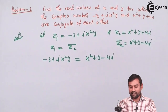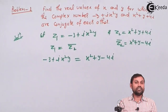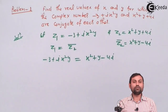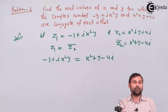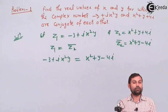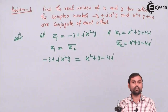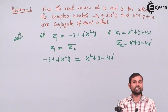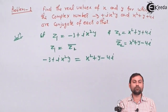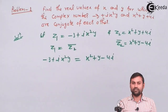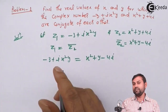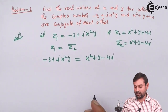अब यहाँ पर एक concept use करेंगे — equality of a complex number। When two complex numbers are equal, कब दो complex numbers equal होते हैं — जब उनके real parts equal होते हैं और imaginary parts equal होते हैं, तब जाके दो complex numbers equal होते हैं।